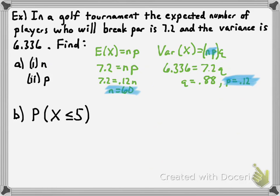Now we find the probability that X is less than or equal to 5. You can type this directly into the binomial CDF function on your calculator with n equals 60 and p equals 0.12. The result is a 0.259 probability — about a 25.9% chance that five or fewer golfers in this tournament will break par. That's how you use expected value and variance together to find n and p, and then calculate probabilities. Thanks for your attention — hope this has made things easier!